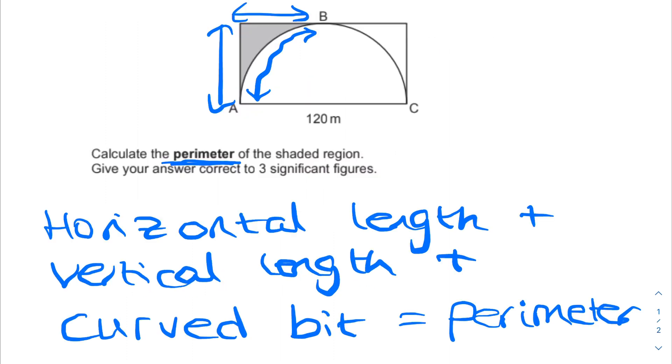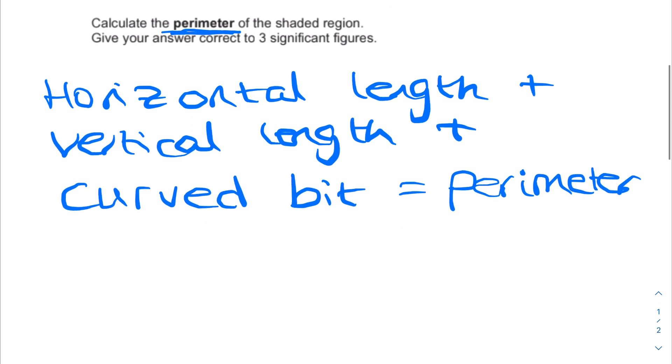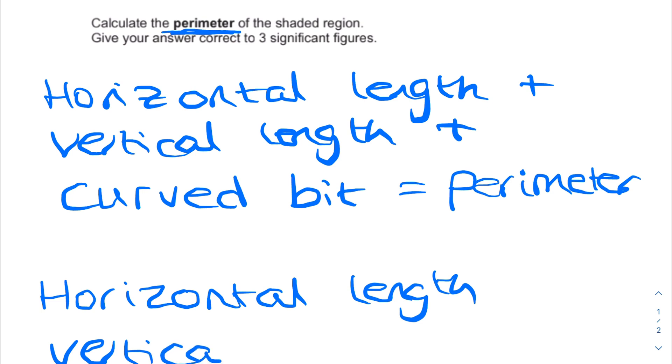Now what we do is we start breaking these down and working them out. So horizontal length and the vertical length, if you notice, is just from one corner of the circle to the middle, and that signifies to us that this must be the radius, because the radius is the same all around the circle from the center.